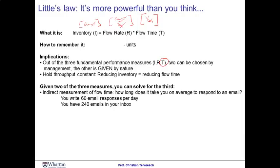This is really not a number that most of us routinely track. However, you can compute it quite easily. If you have 240 emails in your inbox — that is your inventory — and you're writing 60 emails per day — that's your flow rate — then Little's Law tells us that your average flow time is four days. Some emails you might respond to faster, some might take longer, but on average it takes four days to respond to an email.